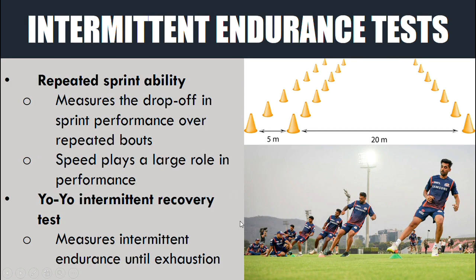In terms of intermittent endurance tests, we have standardized tests that are probably going to be more applicable for team sports. We have something like a repeated sprint ability test, which essentially measures the drop off in sprint performance over repeated bouts. The athletes will have a certain distance that they need to run as fast as they possibly can with a short rest period, then sprint again, continuously doing that for a certain number of efforts.